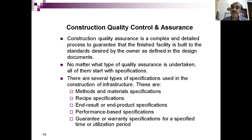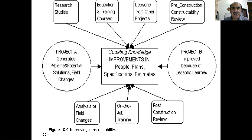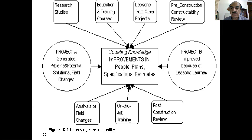Warranty and guarantee specifications are provided by manufacturers and suppliers, normally for a period of one year. Within that period, if there is any quality problem, the product is either repaired or replaced by the supplier. To improve construction quality, we can consider pre-construction constructability — whether the design can be applied at the site — lessons from other projects, education and training of staff, research studies on problems and potential solutions, and field changes through on-job training.